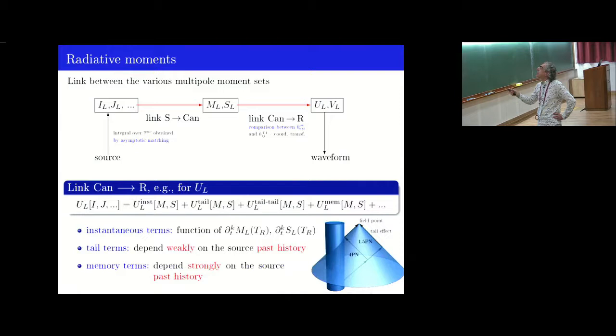So this makes a connection between the source and the waveform in the following way. By asymptotic matching, you can compute, actually, as volume integral over the post-Newtonian source, the source moments. And then you can relate them to the radiative moments. More precisely, using some intermediate canonical moments, encoding the same information as the source moments, you can write UL and VL, similarly, in terms of ML and SL, depending themselves on IL, JL, and so on. And so you have this kind of decomposition: an instantaneous contribution, which is made of product of derivatives of the canonical moments ML and SL, tail and memory contributions, and many more, which are actually hereditary contributions, integrals depending on the past history of the system. The tail term depends weakly on the source past history, whereas the memory term depends strongly on this history.